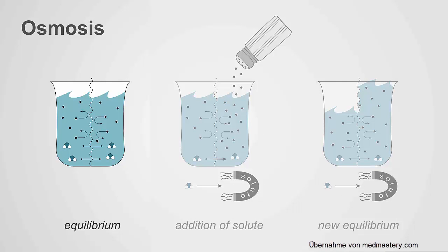Let's talk about osmosis first. We're going to do a simple beaker experiment. We have a semi-permeable membrane dividing the beaker into two. Inside the beaker, there is solute on both sides of this membrane, and that solute cannot cross the membrane — it is impermeable to that solute. Of course, there's also water in the beaker, and water can freely cross the membrane.